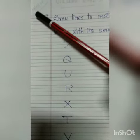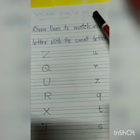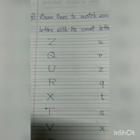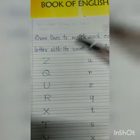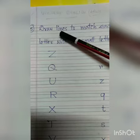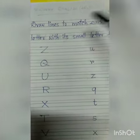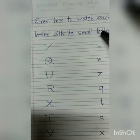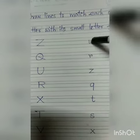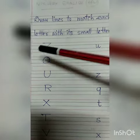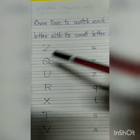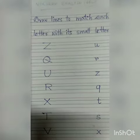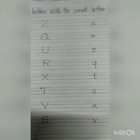Hello my dear students. Today's date is 14 of December 2020. This is our nursery English homework class. You have to write in your homework copies. Look at what is written here: draw lines to match each capital letter with its small letter form. Here are some capital letters and here are small letters. This is very easy, we did it before, and today we'll do it again.